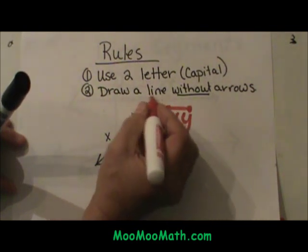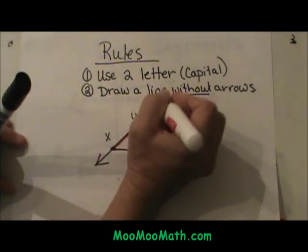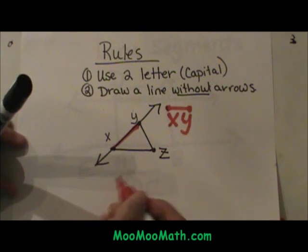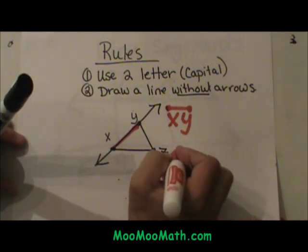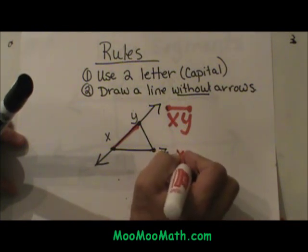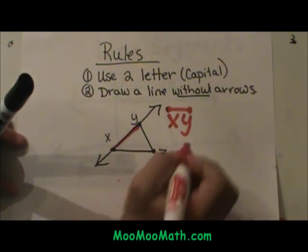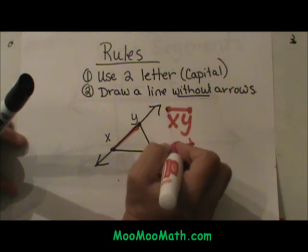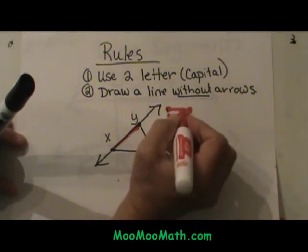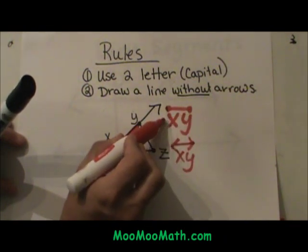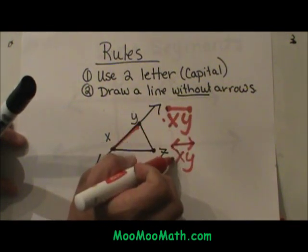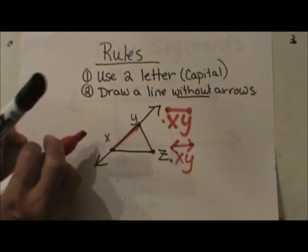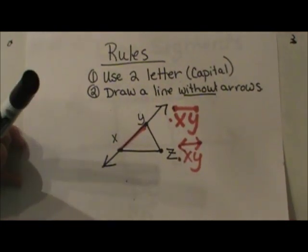Now if I wanted to name the whole line as it continues forever — there's another video on lines — you would name it XY with a line with arrows on it. So that's the difference between a line segment and a full line. Hope this video was helpful.